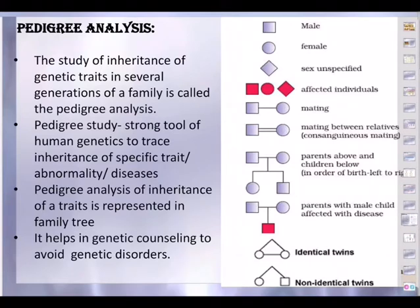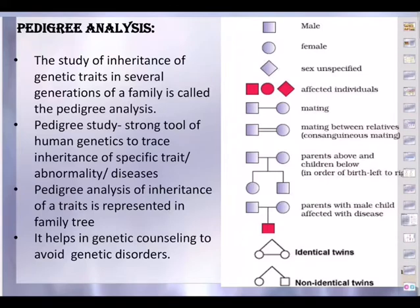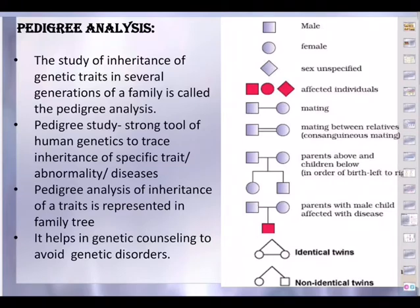Pedigree analysis of inheritance of traits is represented in a family tree. It helps in genetic counseling to avoid genetic disorders. Whenever we do pedigree analysis, we use certain symbols as you are seeing on the right side of your slide. A square represents a male, a round circle represents a female, and if the square is tilted like a rhombus, then it is unspecified sex. If these symbols are shaded or blocked, it means those are affected individuals.